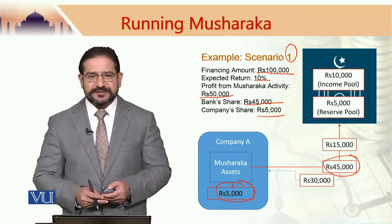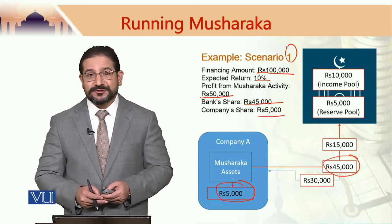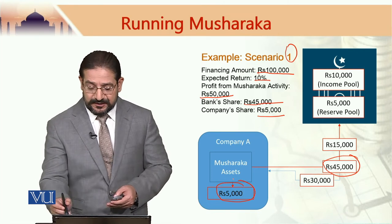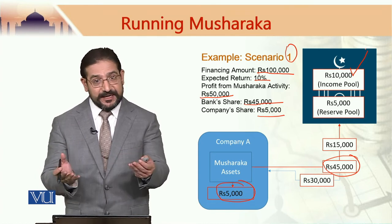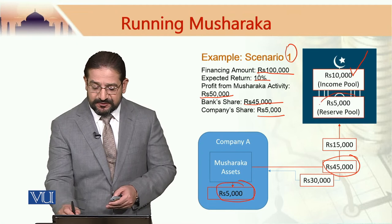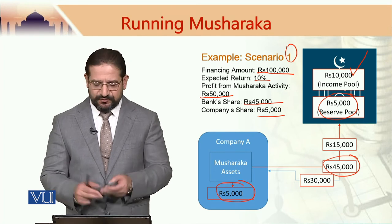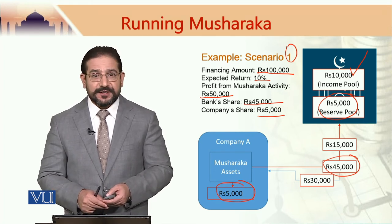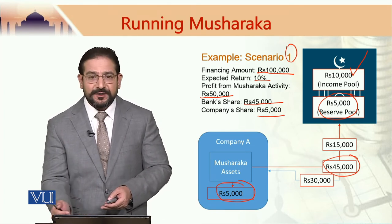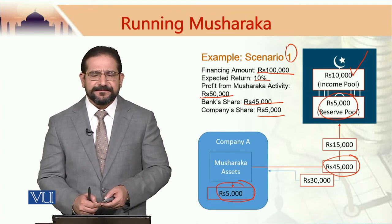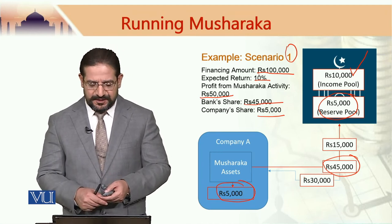Because the bank was actually looking for only a 10 percent return — i.e., 10,000 rupees profit — it would retain 10,000 rupees as its profit. The remaining 5,000 would be put into a reserve pool within the bank, and the remaining 30,000 would go back to the company in the form of investment, to be reinvested in the Musharraka asset.